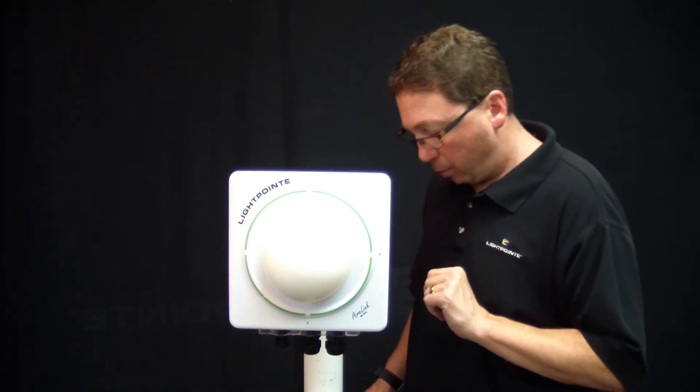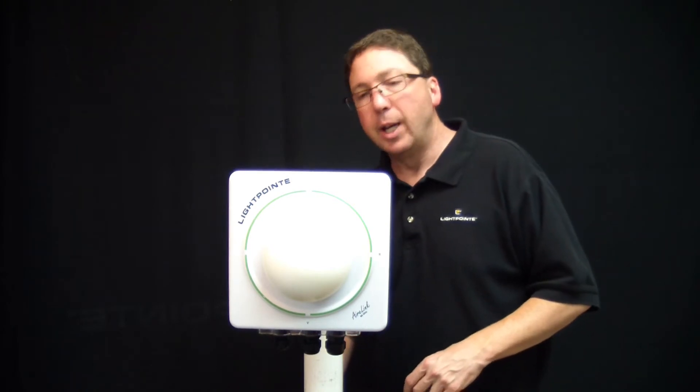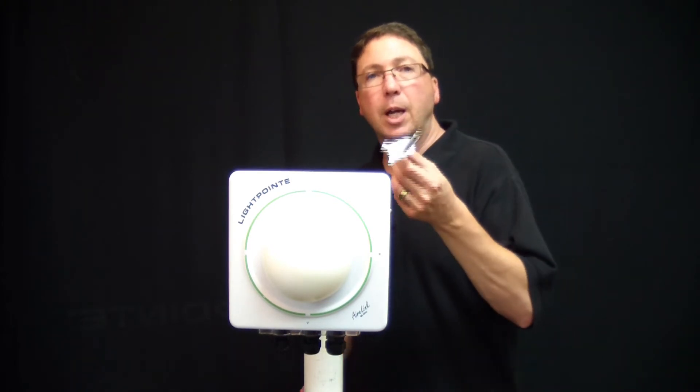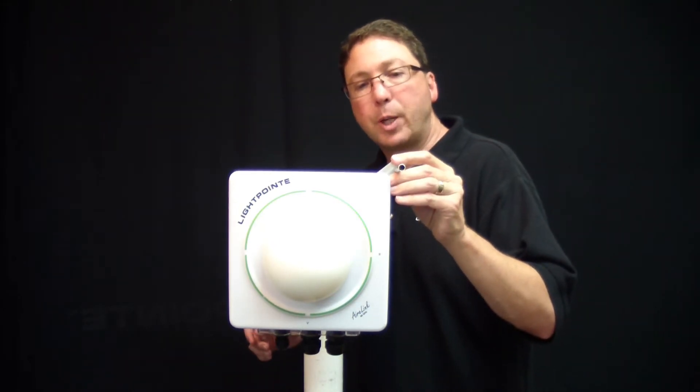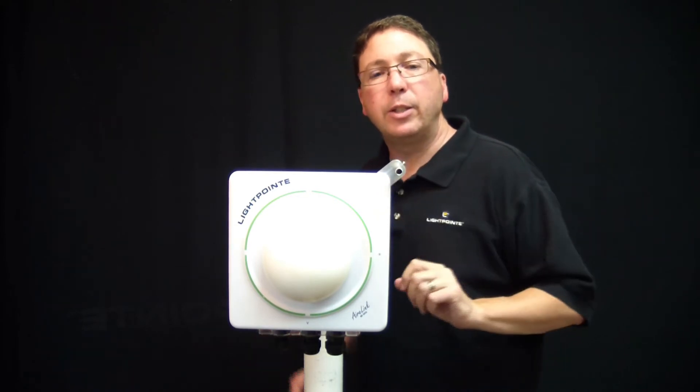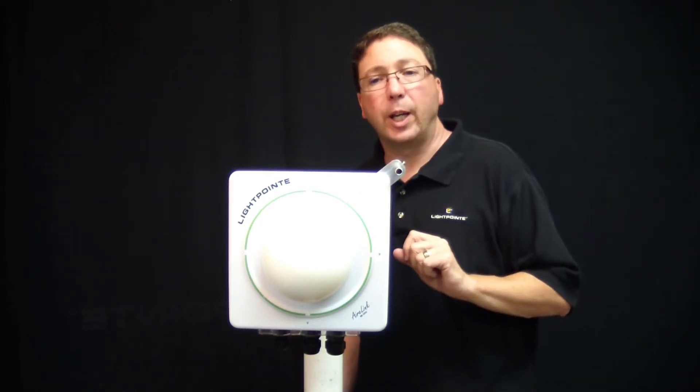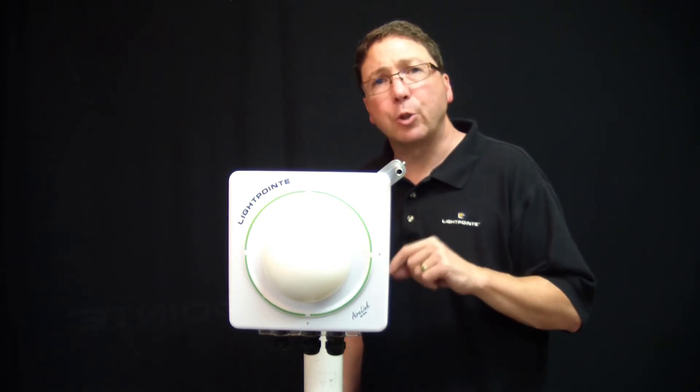One other point before I switch to showing you more details about the underside of the unit is I want to talk to you about the alignment tool that we have. So one of the things when you're doing an alignment, especially if you haven't done a lot of millimeter wave, is you really need something that helps you get to the right location. If you're familiar with LightPoint's other products, we always have a telescope built in.